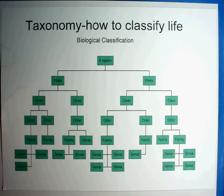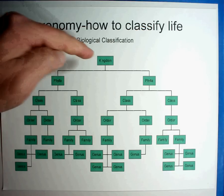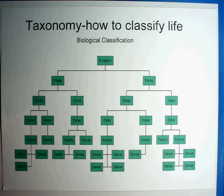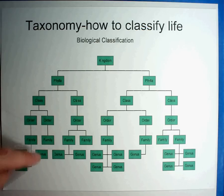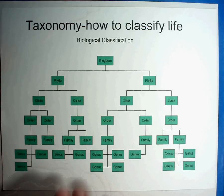The basic diagram starts with kingdoms, then phylum, class, order, family, genus, and species. That is how we're going to classify life.